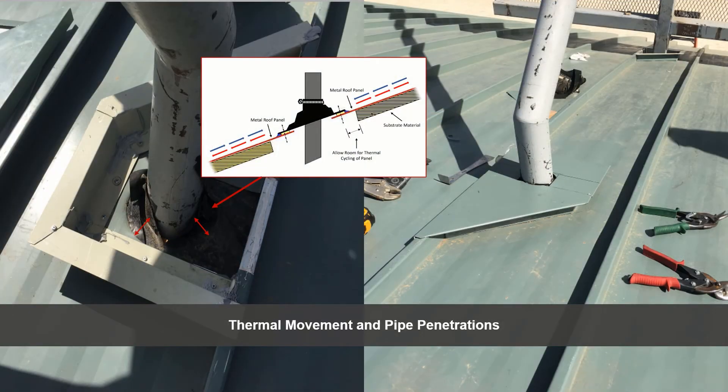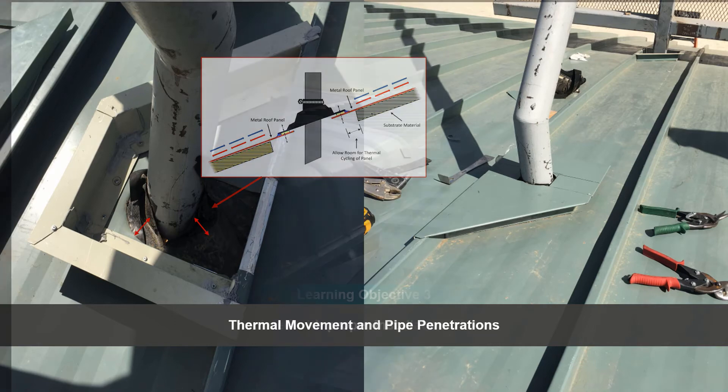Metal roofing systems thermally cycle — they expand and contract along with ambient temperatures. The rough opening in the metal panel must be large enough to accommodate this inherent movement in the panel, but small enough for the base of the pipe penetration to cover it. The pipe penetration will stay in place while the panel and boot move around it. This is the purpose of the flexible pipe penetration: to move with the metal panel and absorb and flex around the rigid pipe.